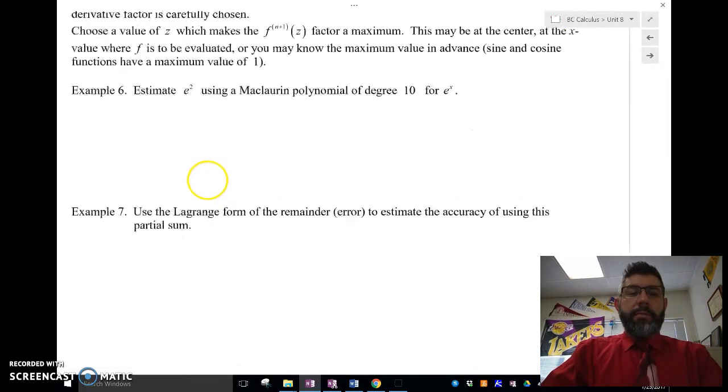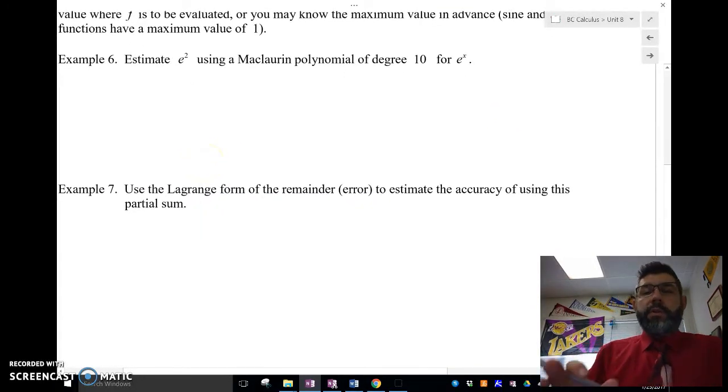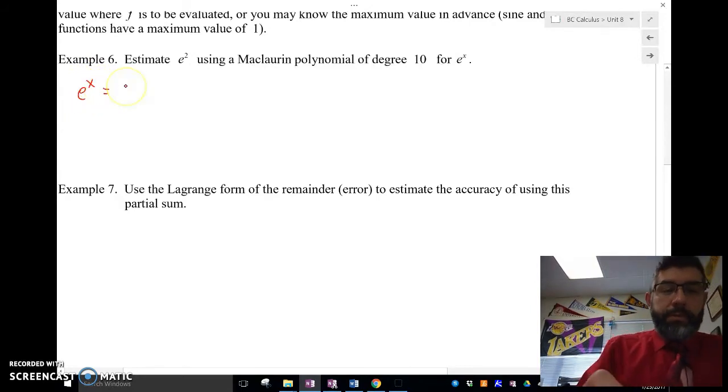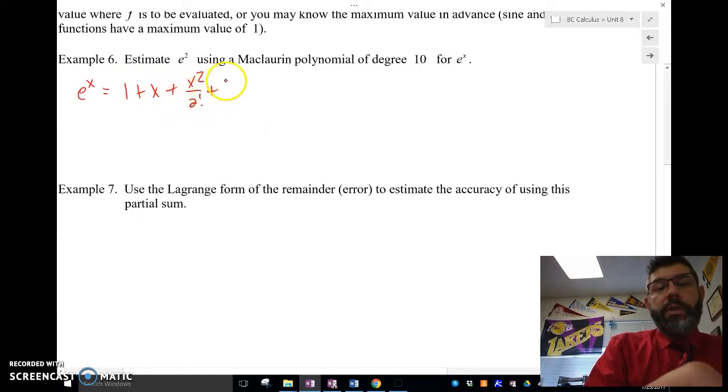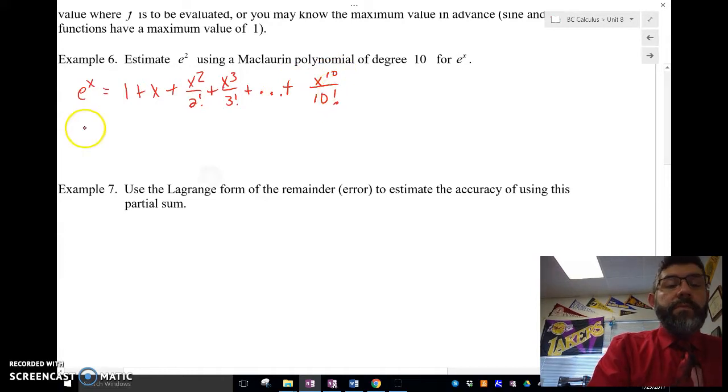Let's do the first example here. We're going to estimate e squared using a Maclaurin series, a Maclaurin polynomial with degree 10. So, we're going to use our basic Maclaurin polynomial, e to the x equals 1 plus x plus x squared over 2 factorial plus x cubed over 3 factorial.